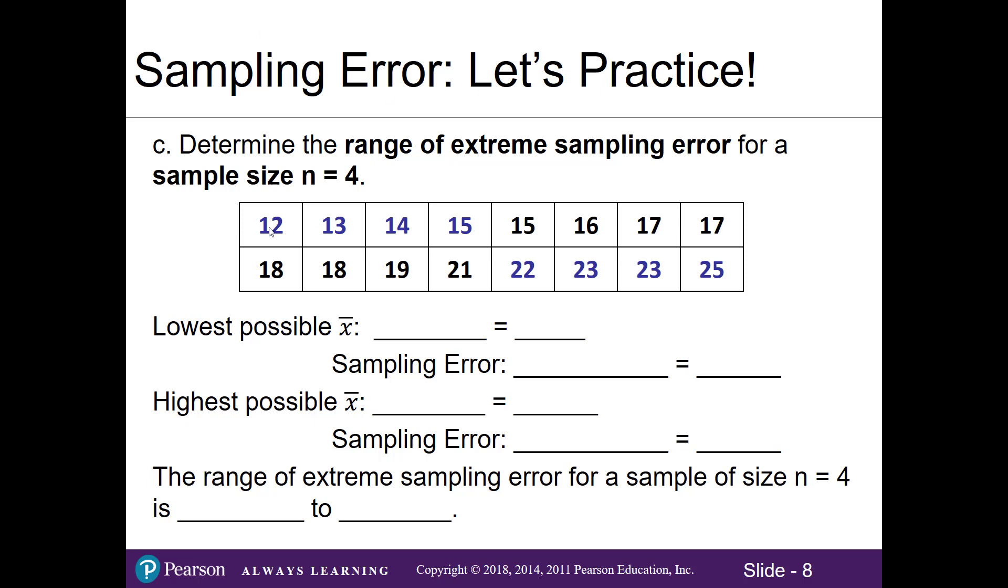You can see here I've got it sorted from 12 up to 25, and in blue here are my lowest numbers. We'll go ahead and find the sample mean for these four lowest numbers—we use four because we're told to use a sample size of 4. When I add up my numbers I get 54 and I'll divide by 4.